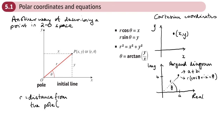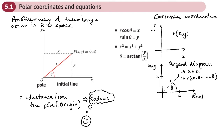You can think of the pole as being like the origin — r is like a radius, so it may be helpful to think of it that way. We also have an angle, theta, which is measured in radians, just like the argument of a complex number.